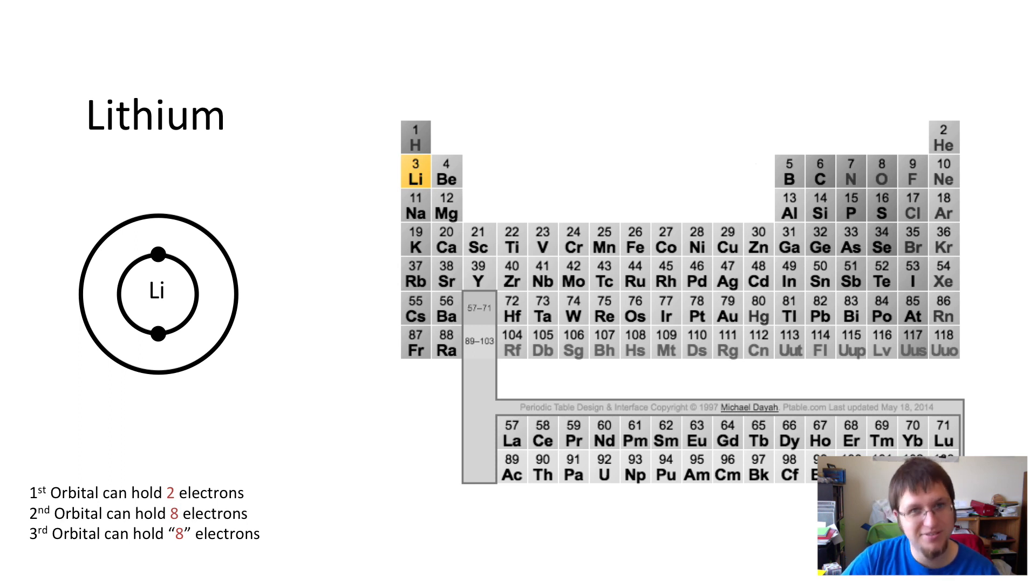So we now need to move on to the second shell. And we'll put that electron there. That's it. It's done. That's the electron shell diagram for lithium. You'll notice that all three electrons are there, and each orbital is only holding as many as it can. So this is kind of a simplified version of the element lithium that helps us understand a little bit more.